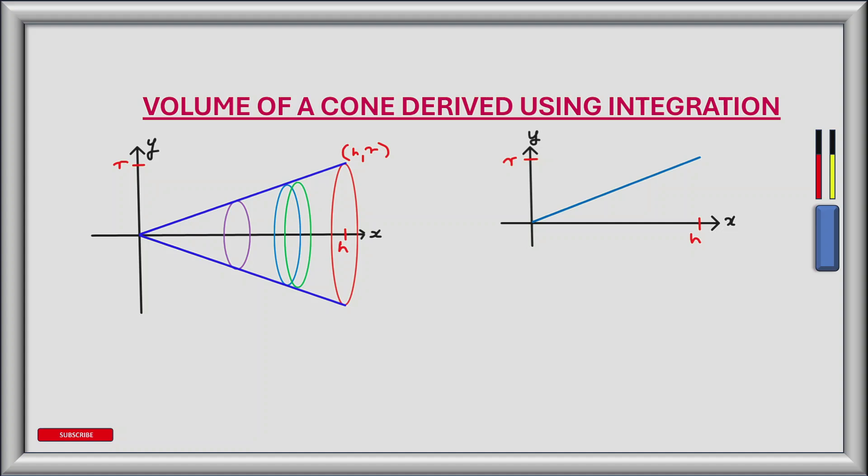The equation of this line is given by y equals mx plus c where m is the gradient and c is a constant. The gradient m is given by the rise divided by the run. The rise in this case is r and the run is h. So rise divided by run is r divided by h. The equation of this line is y equals rx divided by h plus c which is 0. So y equals rx divided by h.